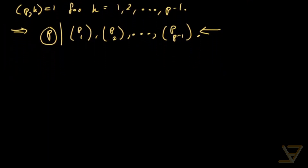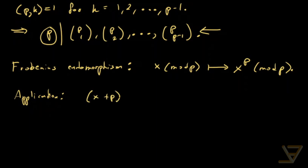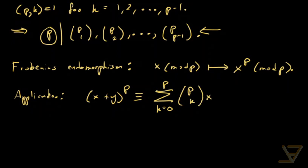Now we're going to apply this idea to the Frobenius endomorphism. The Frobenius endomorphism — it's a mouthful but it's nothing complicated. It's just the map that takes x mod p and maps it to x to the power of p mod p. The application is a property of the Frobenius endomorphism which says that x plus y to the power of p, by the binomial theorem, equals the sum from k equals 0 through p of p choose k times x to the p minus k times y to the k.